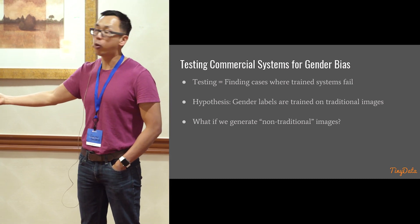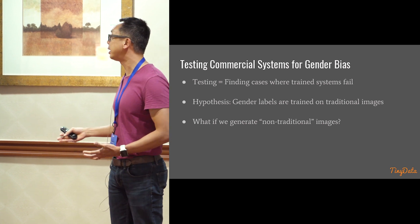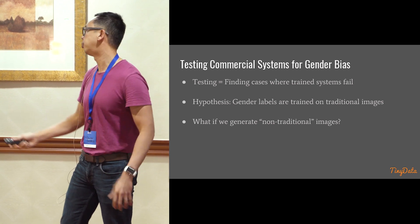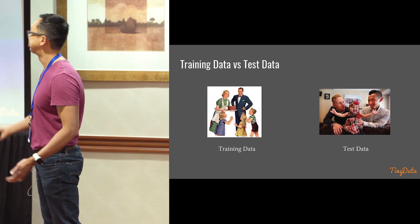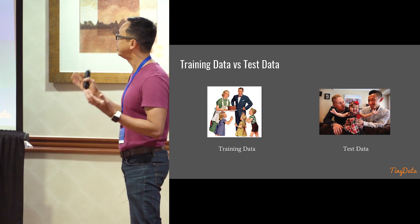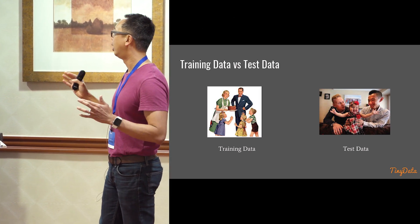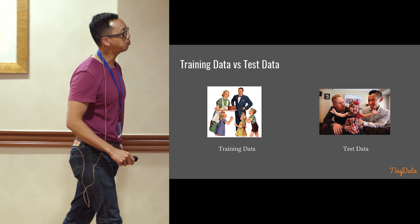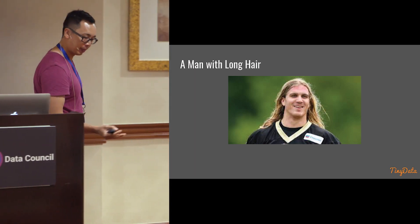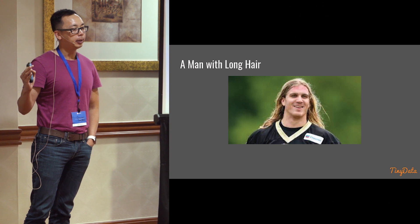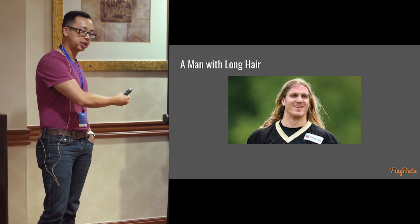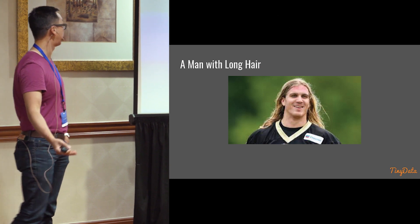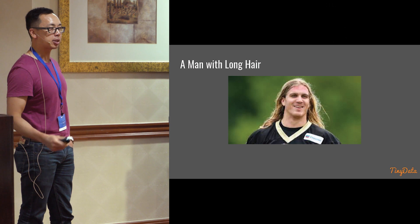We're interested in taking the Gender Shades study further and looking at gender bias from a different point of view — can we find other cases where trained systems fail? The hypothesis is straightforward: gender labels these systems provide are trained on traditional images, so if we present non-traditional images, they're not going to work well. Our internal model is that the training data is mostly based on very specific traditional data, and we're interested in testing the systems with non-traditional data. For example, most labeled males in training probably have short hair.